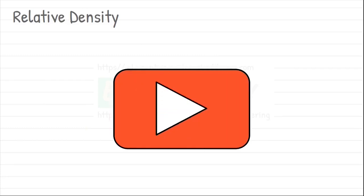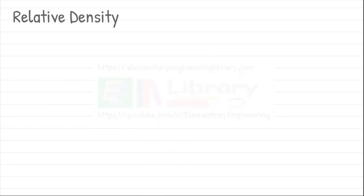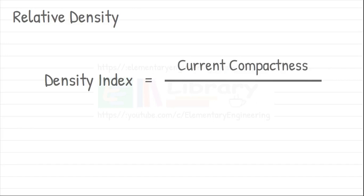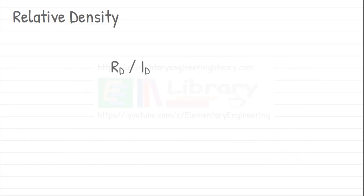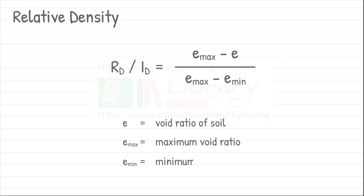Relative density has been discussed in detail in our earlier video. Relative density, which is also called density index, can be understood as the ratio of the soil's current compactness by its maximum compactness. Relative density ranges from 0 to 100%. Higher values indicate a more densely compacted soil and smaller values represent loose soil. It is mathematically defined as this. E is the void ratio of soil, E max is the maximum void ratio and E min is minimum void ratio.